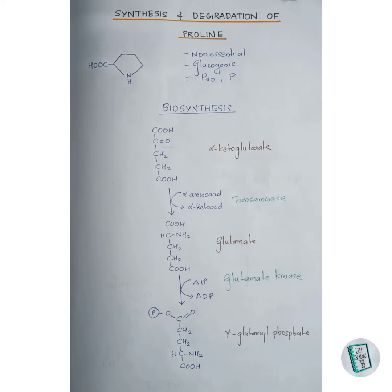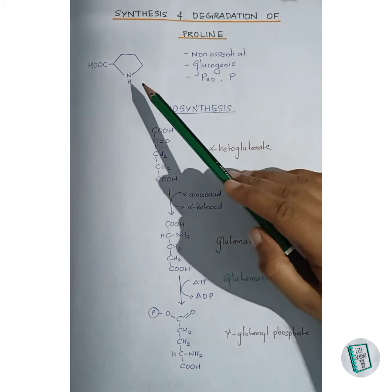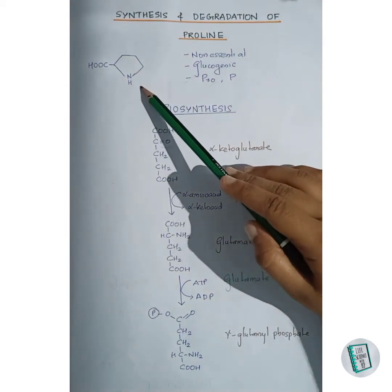Hello guys, welcome back to our channel. Today we will be discussing the synthesis and degradation of proline. Proline is a glucogenic, non-essential amino acid. The three-letter representation of proline is PRO and the one-letter representation is capital P. This is the structure of proline.